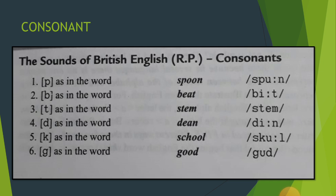There are 24 consonant sounds in English, or in the International Phonetic Alphabet. I would advise my dear students to practice them on a daily basis so that they become more conversant when they go for phonetic transcription.